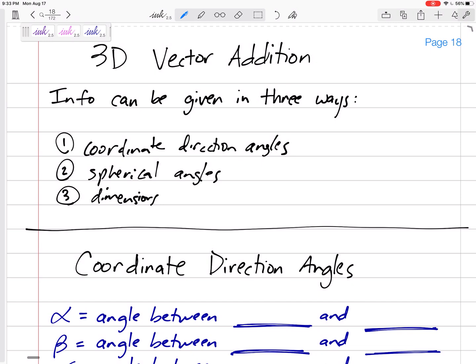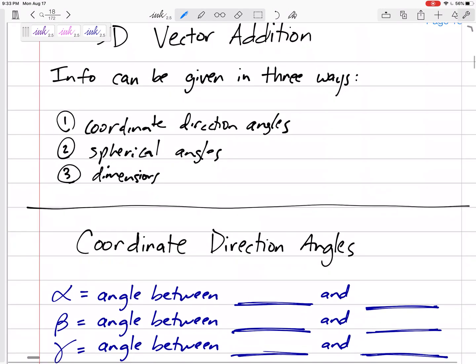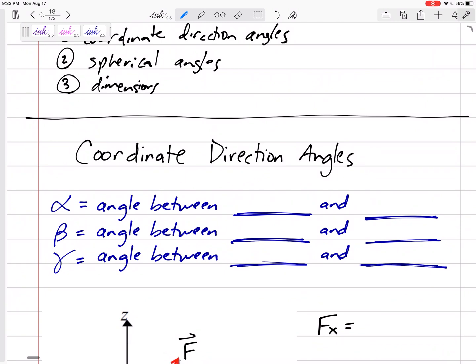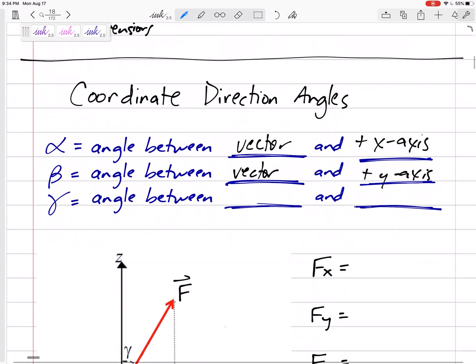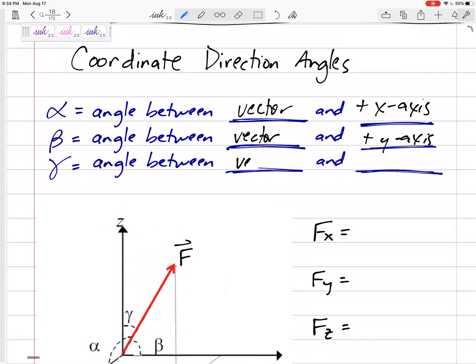I wouldn't say they're the most common. And you guessed it, gamma is the angle between the vector and the positive Z axis.